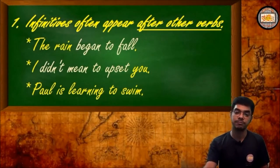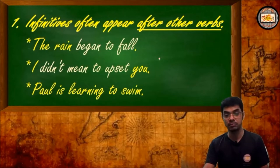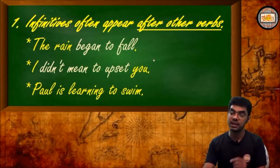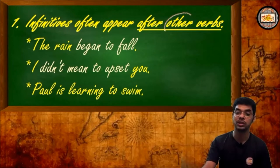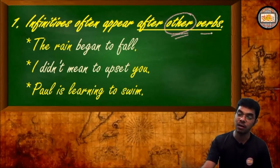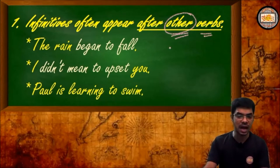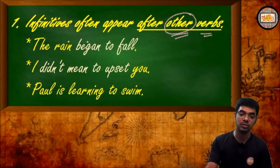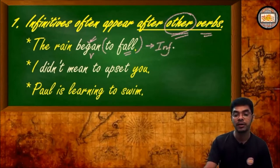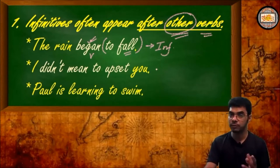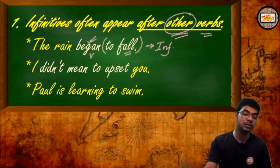Here's the first rule we begin our discussion with: infinitives often appear after other verbs. The point is very important. We call them 'other verbs' because an infinitive is itself formed from a verb. Just have a look at the example: 'The rain began to fall.' Here 'began' is a verb, and after it comes 'to fall' — that is the infinitive.